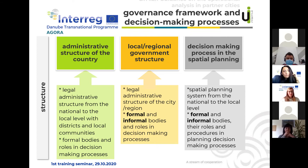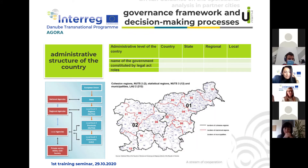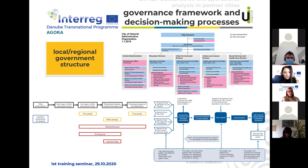Special attention is given to the decision-making process in spatial planning, because it is very important for the project. Partners will present the spatial planning system from the national to the local level and present formal and informal bodies along with their roles and procedures in planning decision-making processes. The administrative structure of the country can be presented in a table, which is part of the template you will receive, and can also be presented in graphical schemes. For the local and regional government structure, there are examples of how to present which stages organizations and stakeholders step into the process.